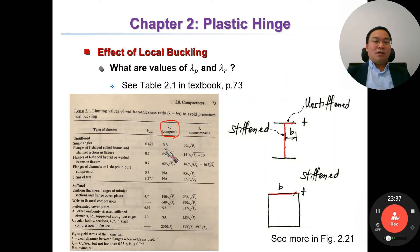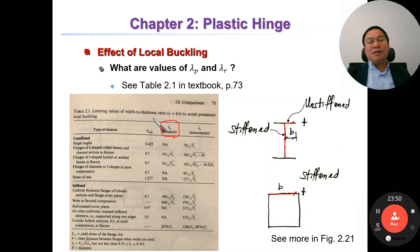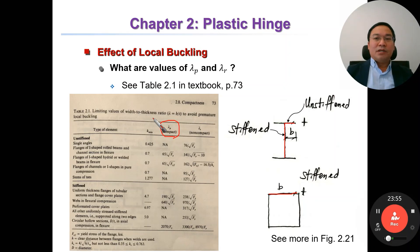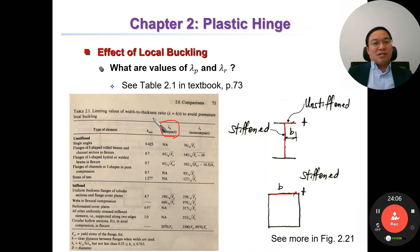To avoid the reduction of plastic moment due to local buckling, we must ensure that local buckling does not occur. This is done by ensuring proper compactness of the section. In LRFD, two sets of limiting width-to-thickness ratios are defined.